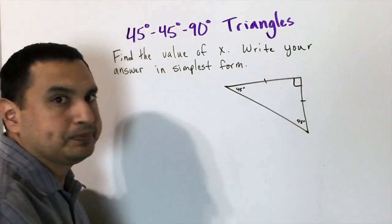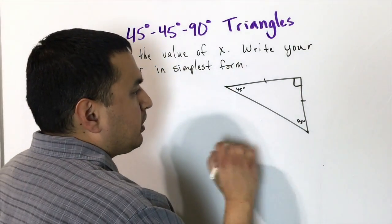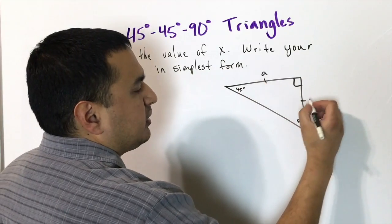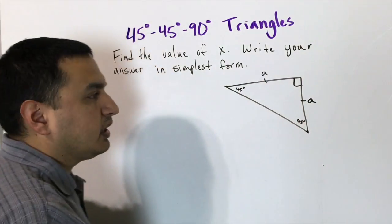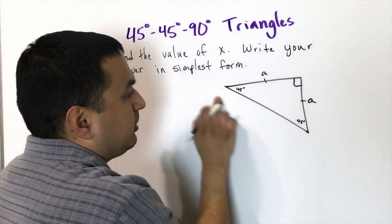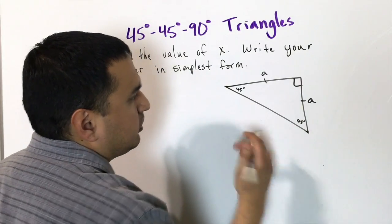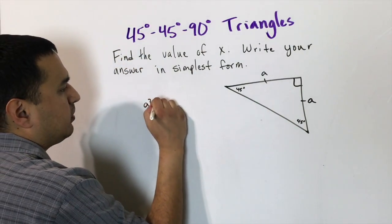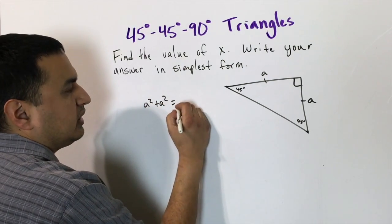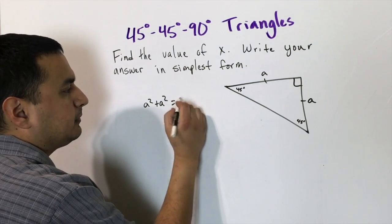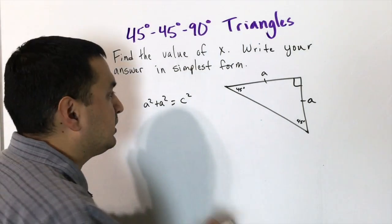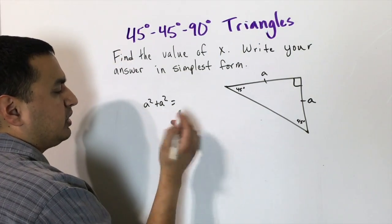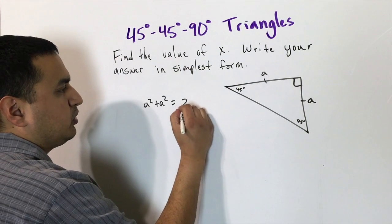We can use the Pythagorean theorem to figure out the side relationships. If we let each leg be 'a', then we have a² + a² = c², which gives us 2a² = c².